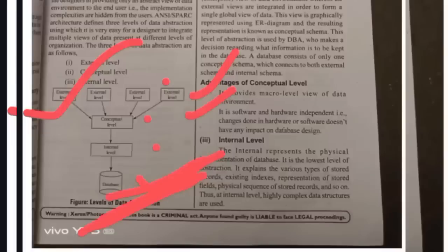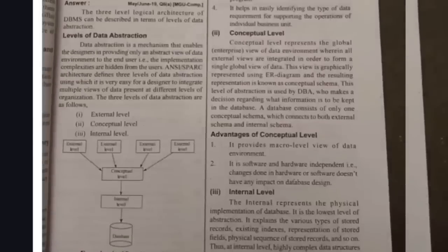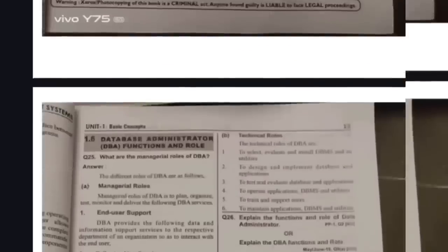The internal level represents the physical representation of data. This is the lowest level of data where everything is stored. No person can view this internal level directly — everyone interacts at the external level only. Data is stored in fields, physical sequences, stored records, and so on. This diagram is important; you should draw each level and explain the whole answer by your own for an eight-mark question, using two pages.